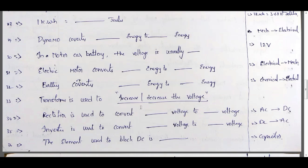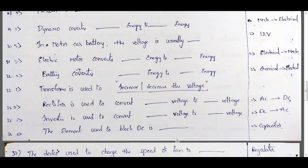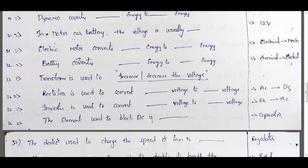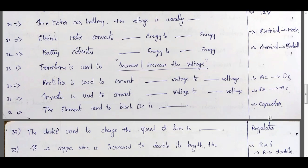Rectifier converts AC to DC. Inverter converts DC to AC. The element used to block DC is called a capacitor — the capacitor blocks DC because for DC, the capacitor is an open circuit.